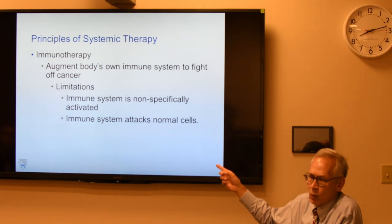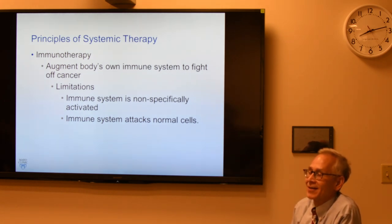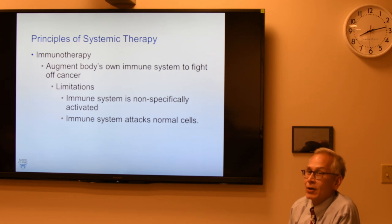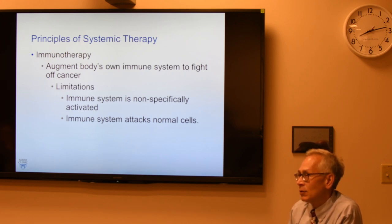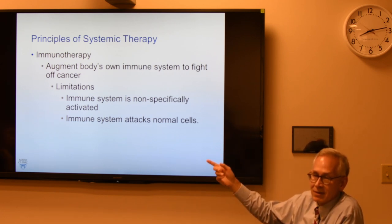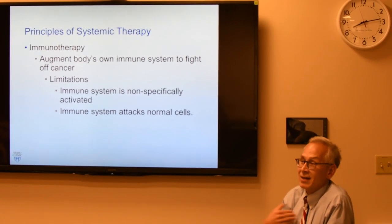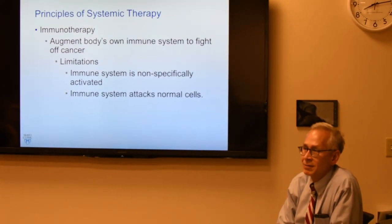How does immunotherapy really work? It doesn't kill the cell directly. It either ramps up the immune system or takes the brakes off it. You're trying to allow your own immune system to fight the cancer. The cancer produces substances that allow the immune system to bypass it and think it's normal. These immunotherapy agents bind those proteins up and allow the immune system to rev up and kill the cancer.